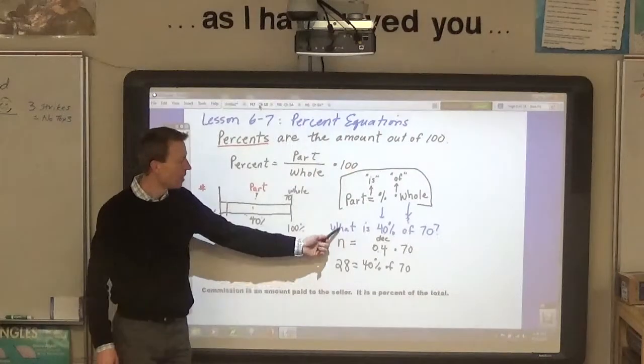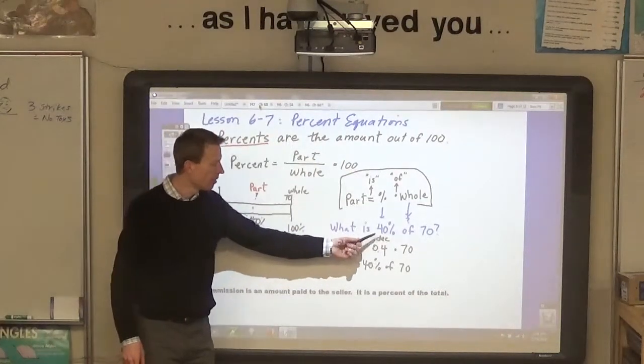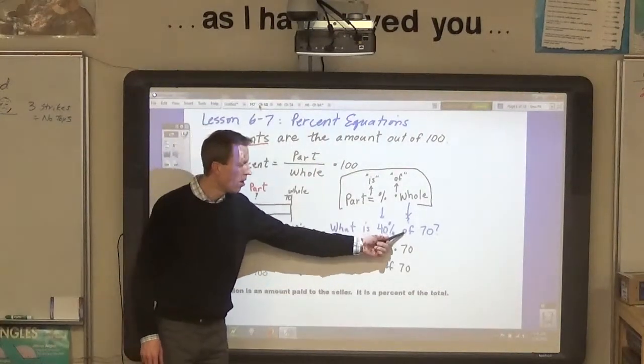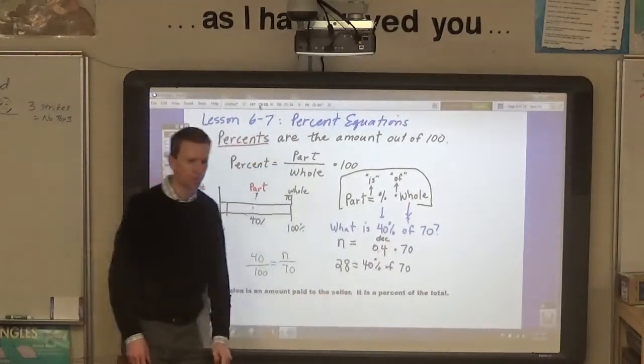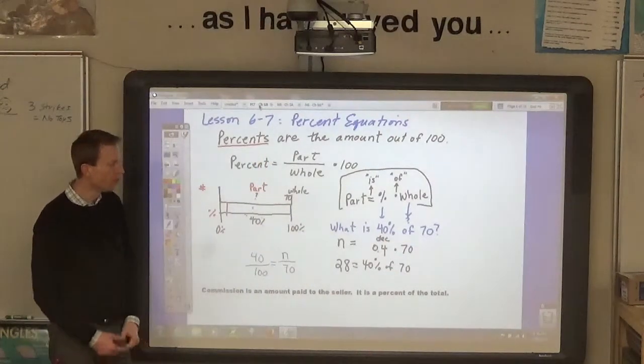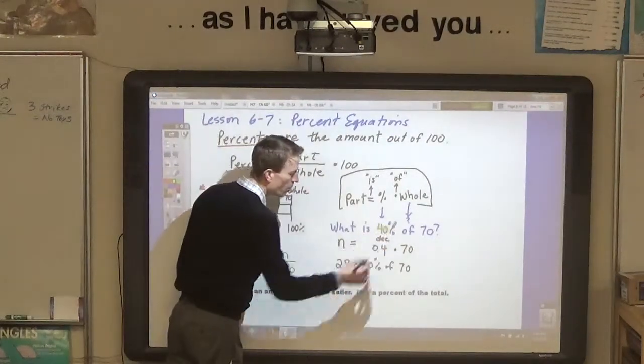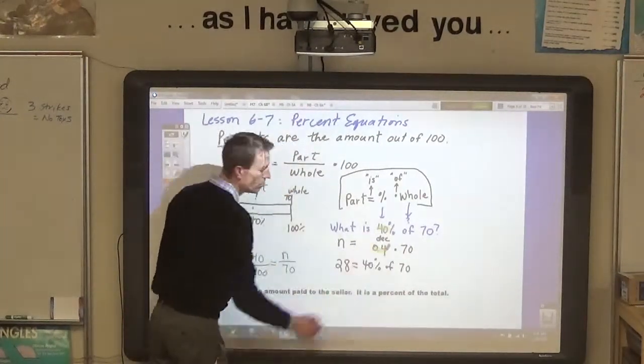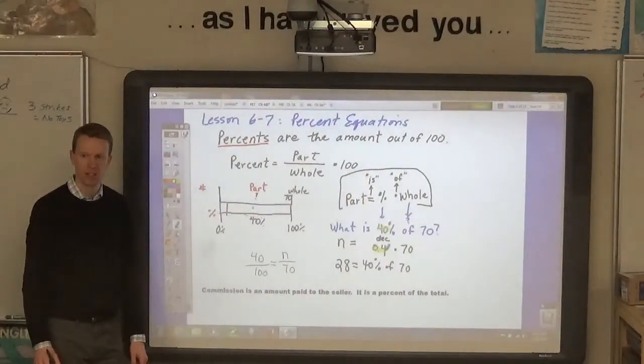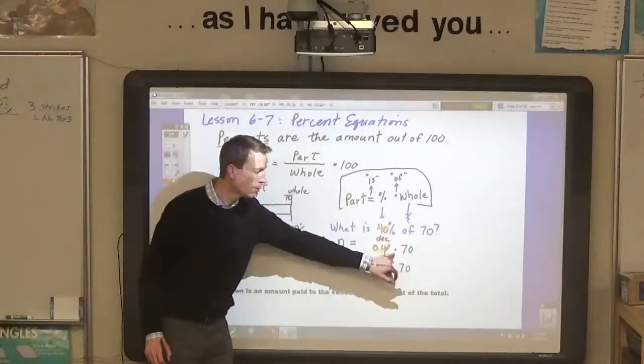So, when it says something like what is 40% of 70, one thing you can do is find the decimal of 40%, convert it to 0.4, and then the word of means multiply.